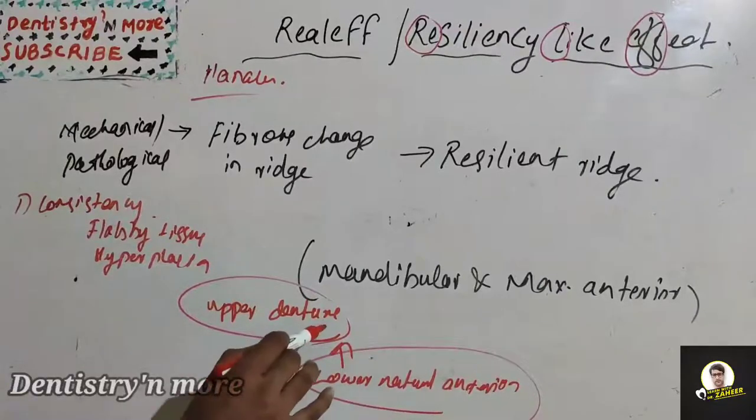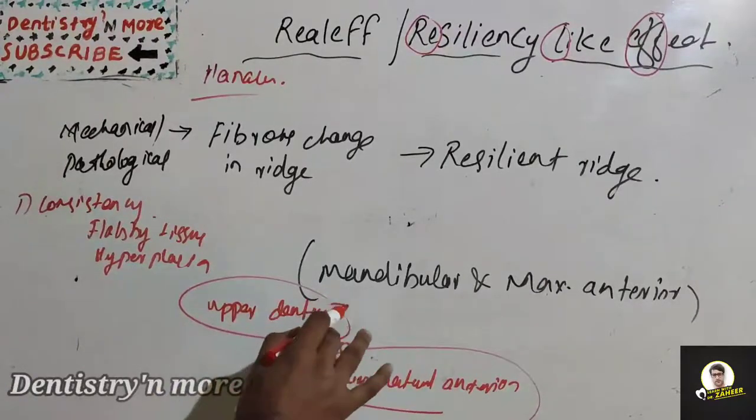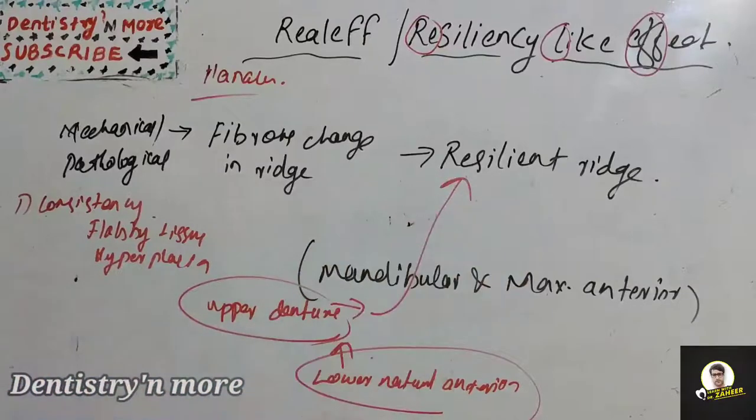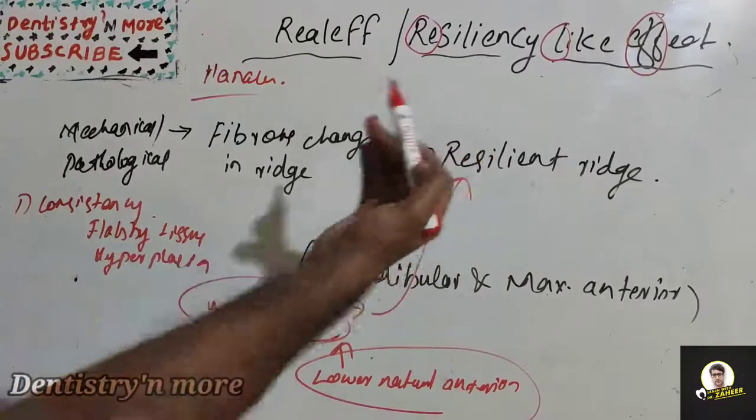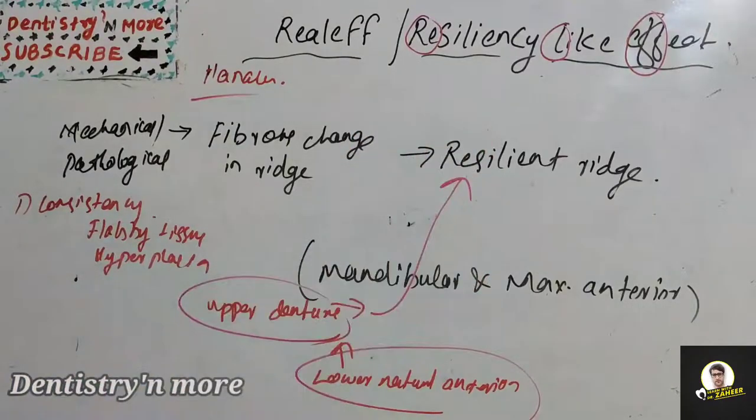This combination, lower natural anterior tooth, will create pressure on upper denture especially in the anterior region. The anterior part of the upper residual ridge will become resilient ridge due to the action of lower natural tooth.